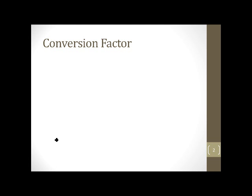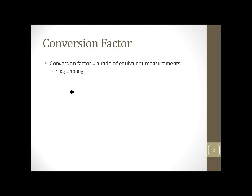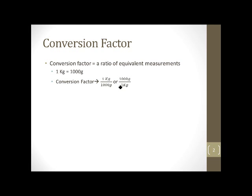The first thing we're going to talk about is a conversion factor. It's an important concept, but not necessarily an important word or definition to memorize. What it is — it's a ratio of equivalent measurements. For example, you should know by now that one kilogram is equal to 1,000 grams. So the conversion factor, anytime you have to convert kilograms to grams or the other way around, would be 1 kilogram over 1,000 grams, or 1,000 grams over 1 kilogram.